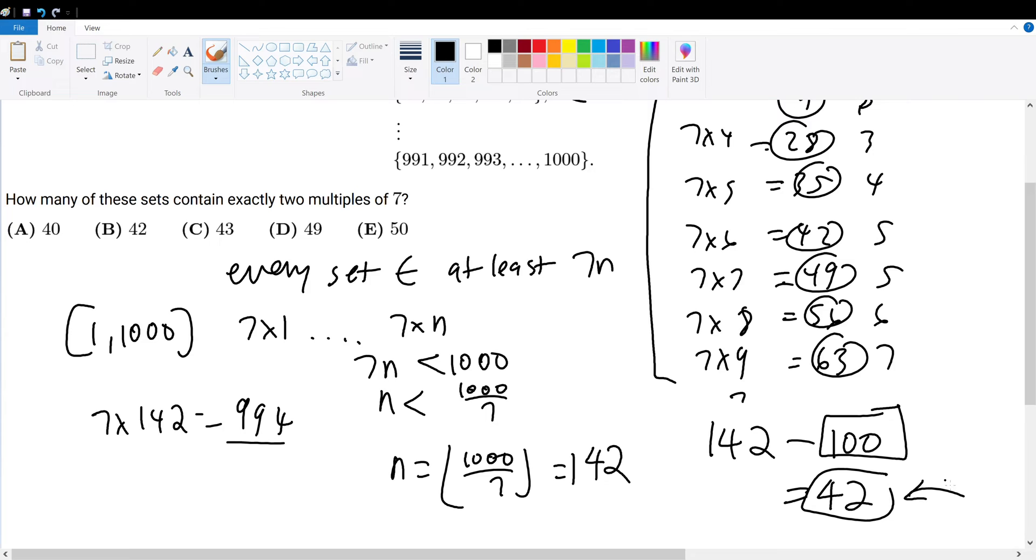But notice here, which is that these 42 left over must be redistributed back to the 100 sets. But each one of these sets already has one multiple of 7. So adding an additional multiple of 7 into the previously established 100 terms that already have a multiple of 7 would give it two multiples of 7s, which is exactly what we want.